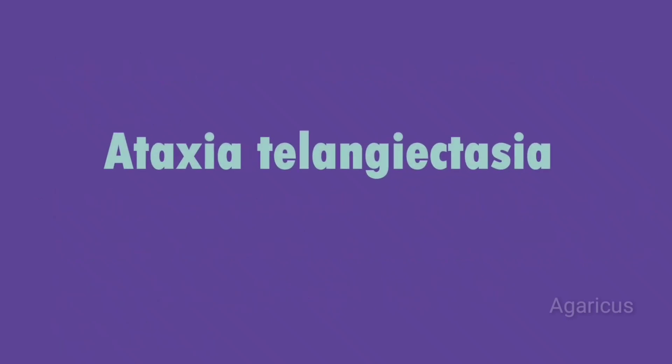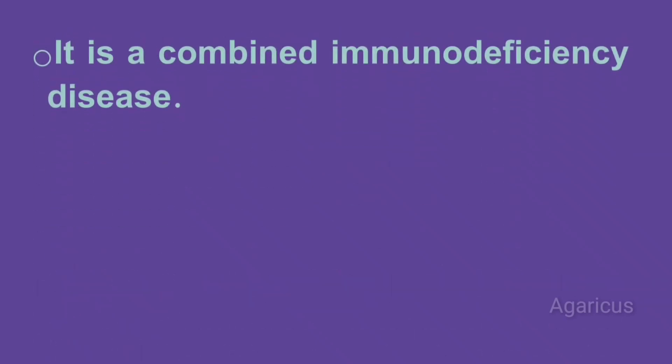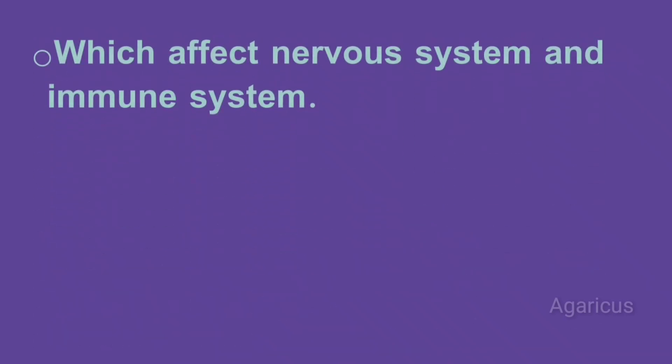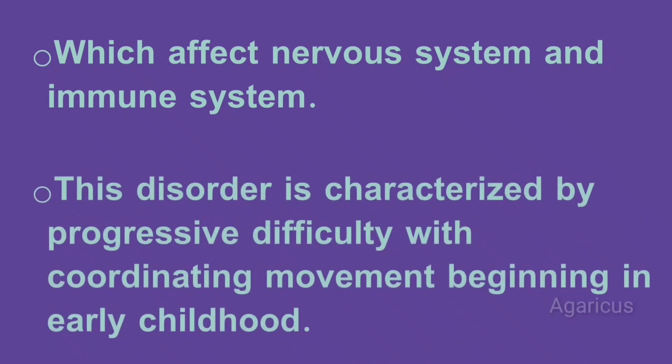Next we are discussing ataxia telangiectasia. It is a combined immunodeficiency disease and a rare hereditary condition which affects the nervous system and the immune system. This disorder is characterized by progressive difficulty with coordinating movement, beginning in early childhood.